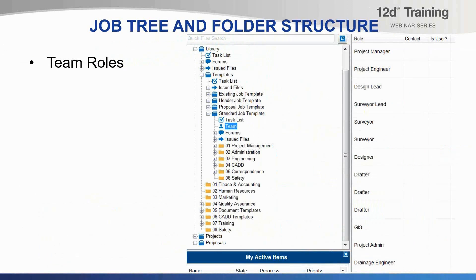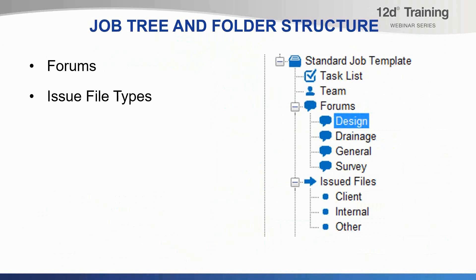As part of setting up a template, we can set up a base list of team roles that can be used on that job or project. Team roles are great for assigning tasks to, or you can even use them for permissions in deciding who gets access to a particular job. Forums are a great way to communicate with the project team. If you wish to use this feature, we will add the forum names to suit your uses. To help separate transmittals, it's always great to create the appropriate issue file types in the templates as well.